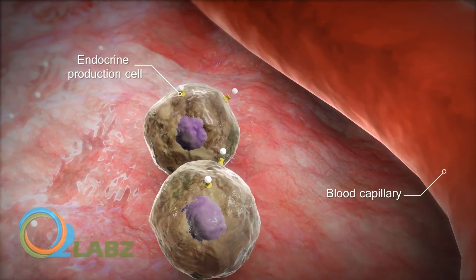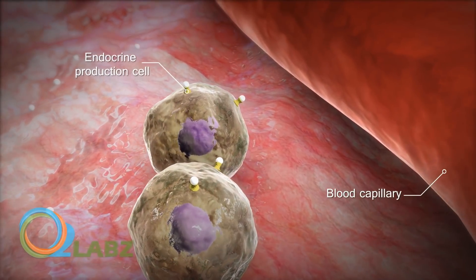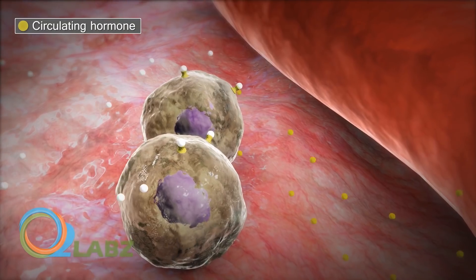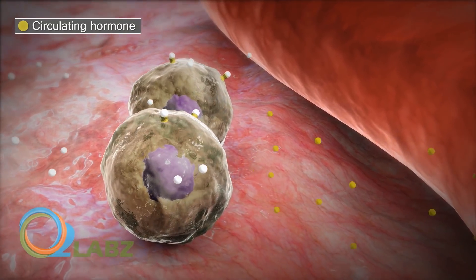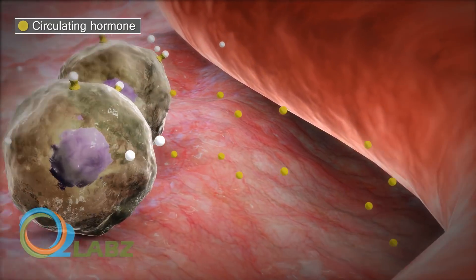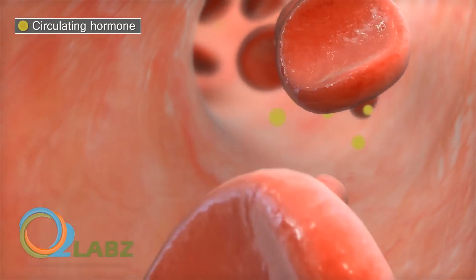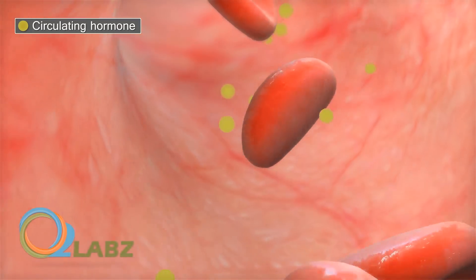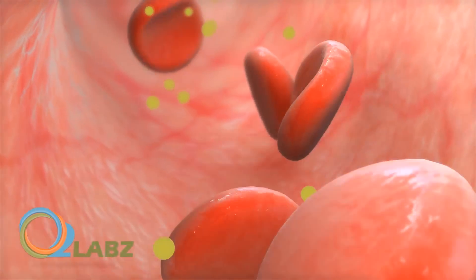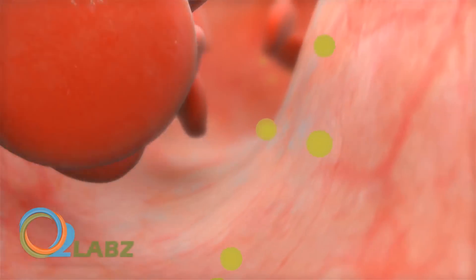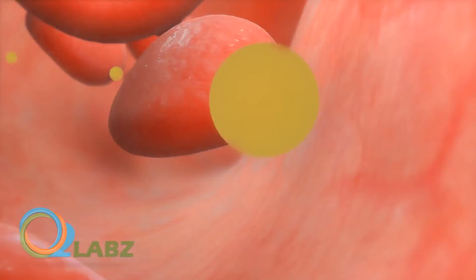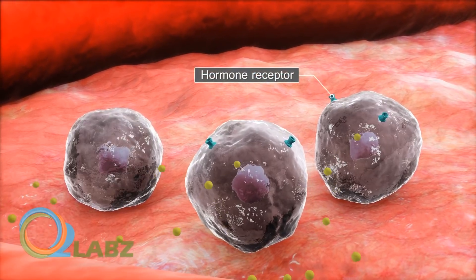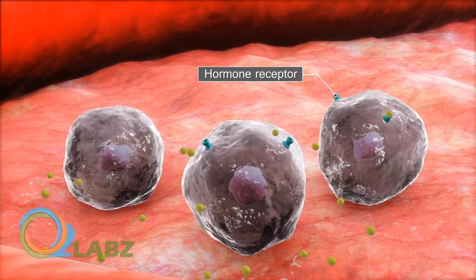Most endocrine hormones are circulating hormones. These chemical signals travel through the bloodstream, facilitating communication between a production cell and a target cell. They pass from the secretory cells that discharge them into interstitial fluid and then into the blood. Only target cells with the appropriate hormone receptor will respond to the hormone signal.